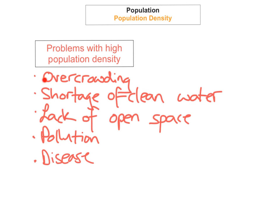Overcrowding is a major problem in Calcutta, putting huge pressure on available services and resources due to the sheer volume of people in such a small area. Some migrants don't even have a busty dwelling and instead live on the streets — these are known as pavement dwellers. The shortage of clean water is also a huge problem, causing many people to become ill and die.